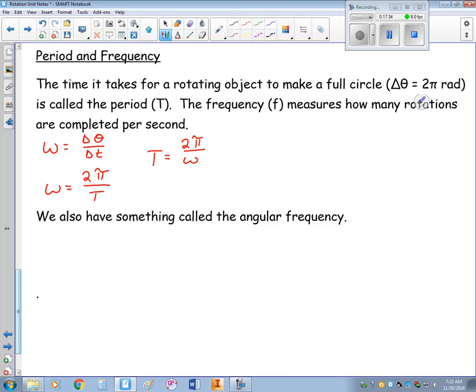Frequency measures how many rotations are completed per second. The way I would calculate frequency is I would take the number one and divide that by the period. And notice then, doing a little bit of algebra, period would also equal one divided by the frequency. Frequency is measured in hertz, which is one per second, or sometimes it's written as s to the negative one.